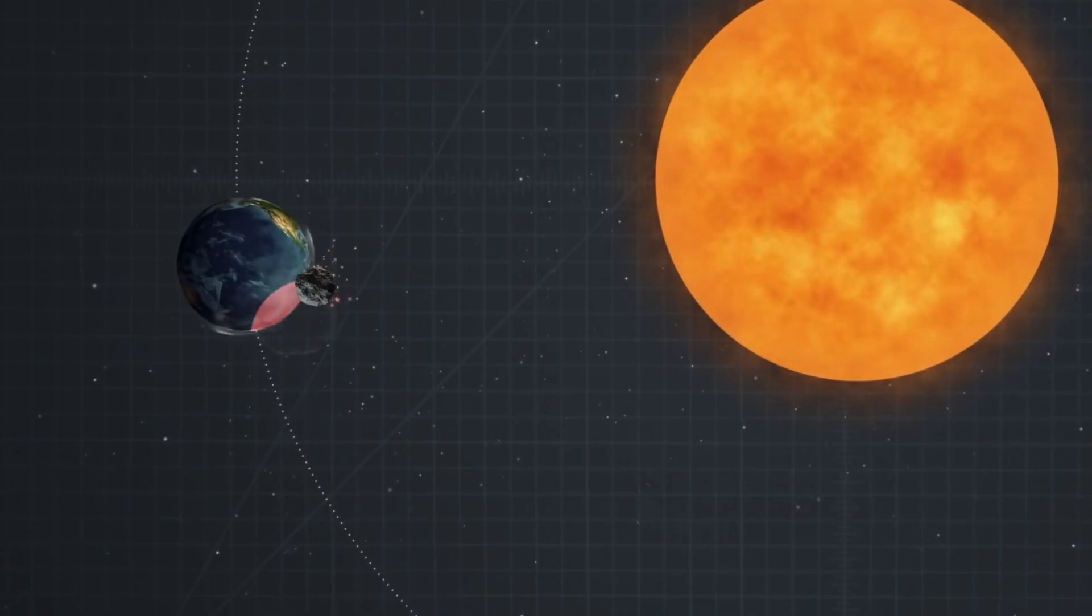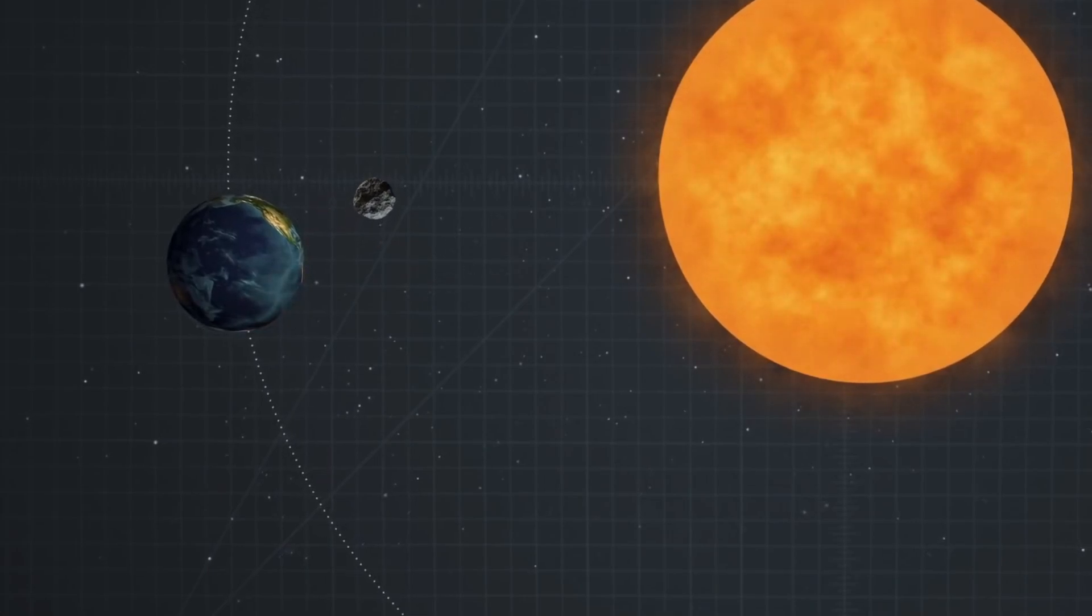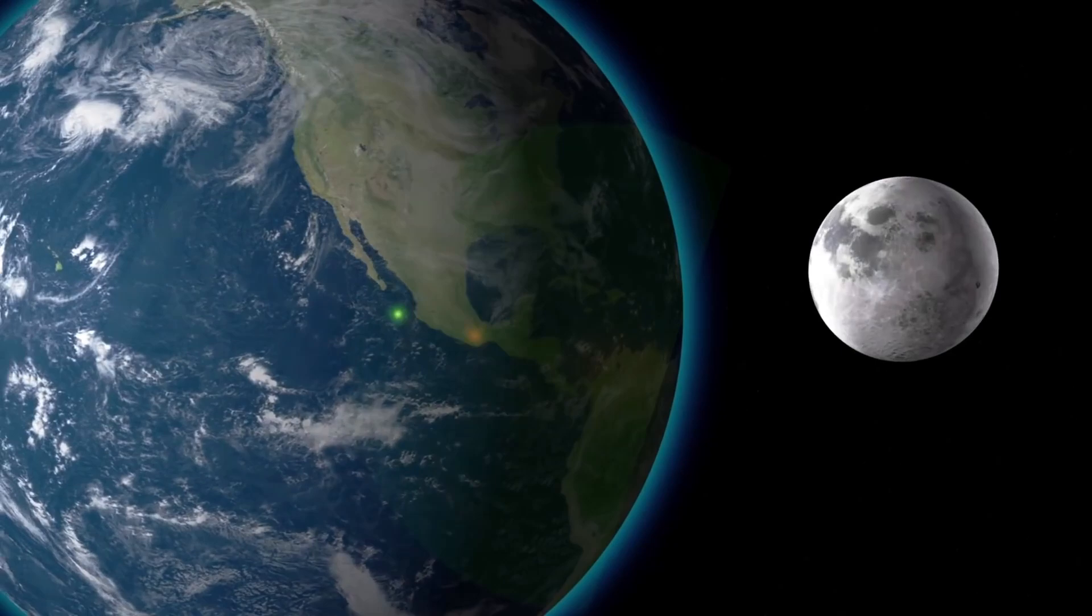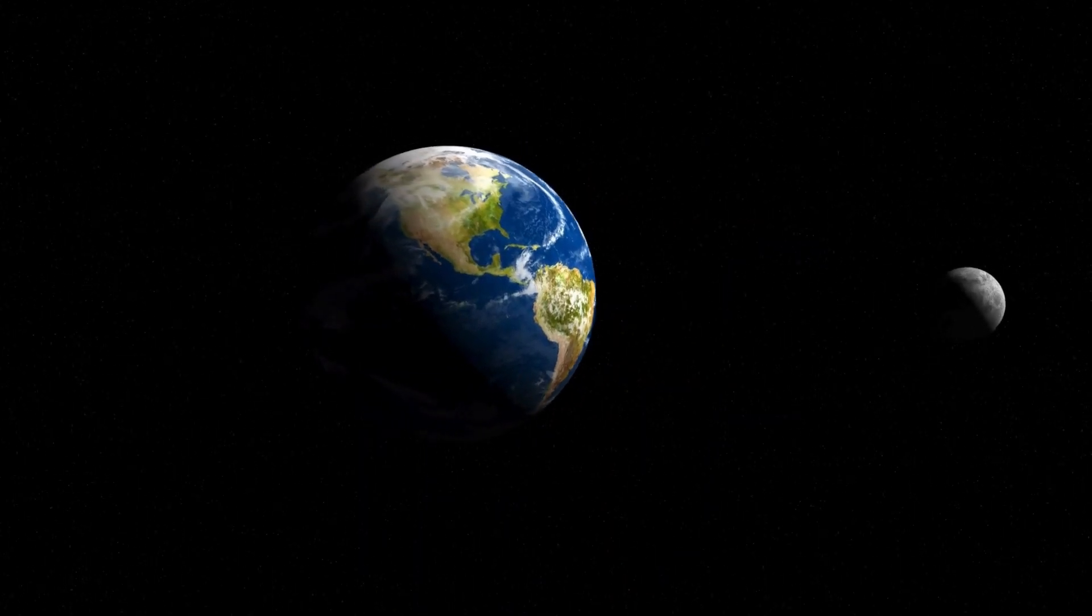What would happen if we nuked the Moon? Since its formation 4.5 billion years ago, following a colossal impact with a planetoid, the Moon has exerted a profound influence on Earth, shaping its evolution.